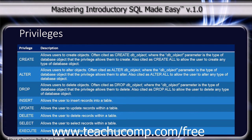The create privilege allows users to create objects, often cited as CREATE database_object, where the database object parameter is the type of database object that the privilege allows them to create. Also cited as CREATE ALL to allow the user to create any type of database object.